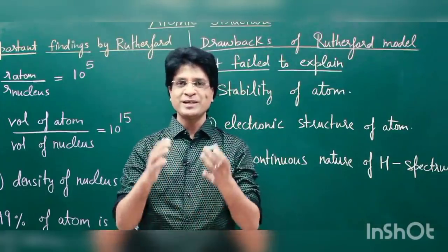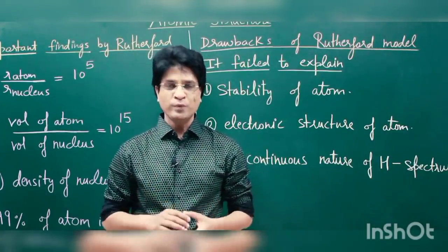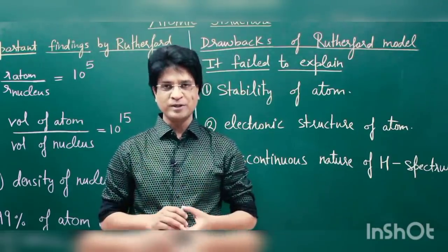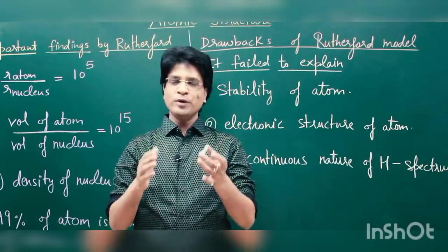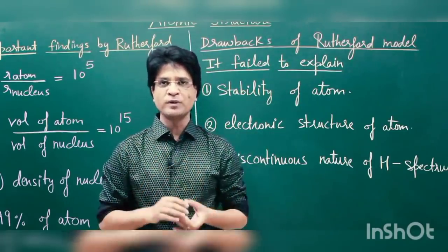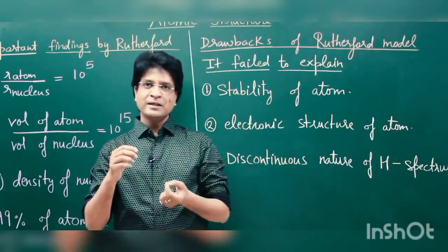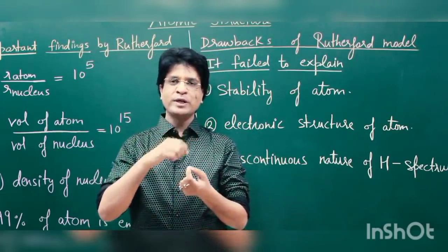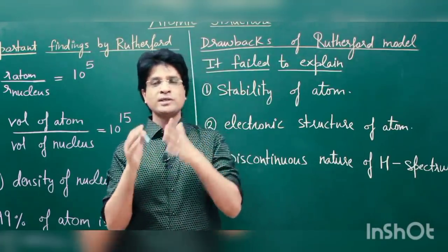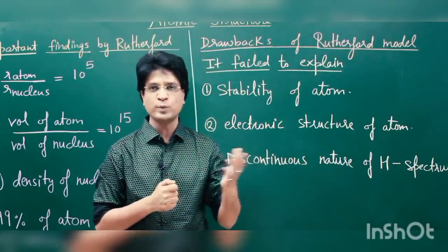Hello students and welcome to the session of Atomic Structure. Yesterday we were discussing the model of atom given by Rutherford. Rutherford gave the name of his model based on the planetary motion of planets around the sun. He said that electron will revolve around the nucleus, but his model could not stand the onslaught of electromagnetic theory developed by Maxwell.